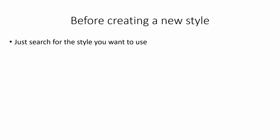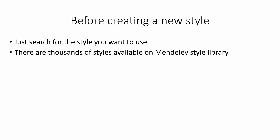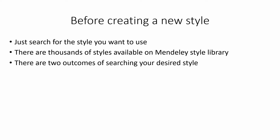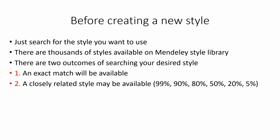Before creating a new style, let me tell you about how to search for your desired style and if it is available online, then how to install it. You just need to search for the style you want to use. As you know, there are thousands of styles available on the Mendeley style library. If you search your desired style, there are two possibilities: the first is that your exact match will be available, and the second is that a closely related style may be available — it might be 99%, 90%, or maybe less similar to your style.